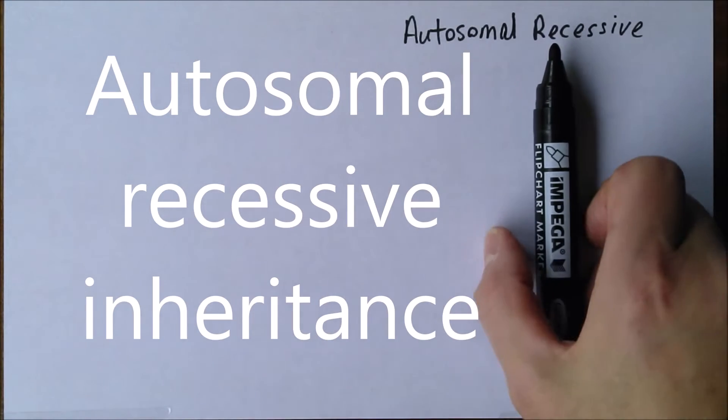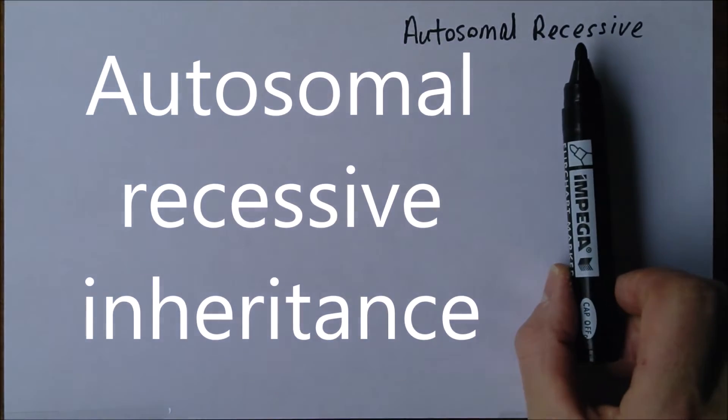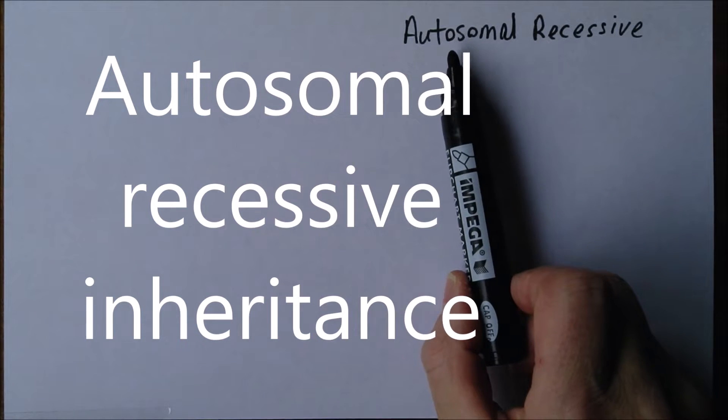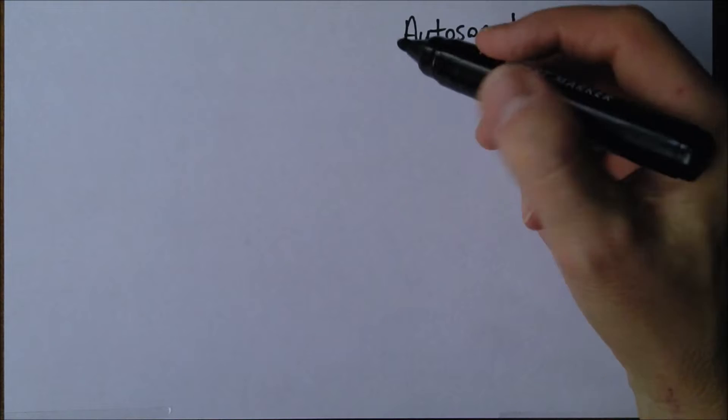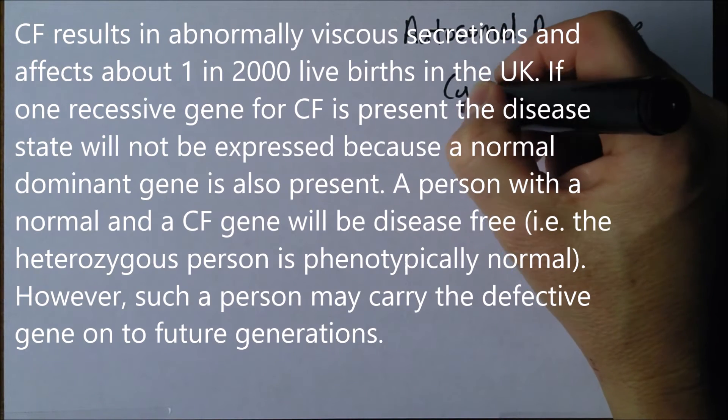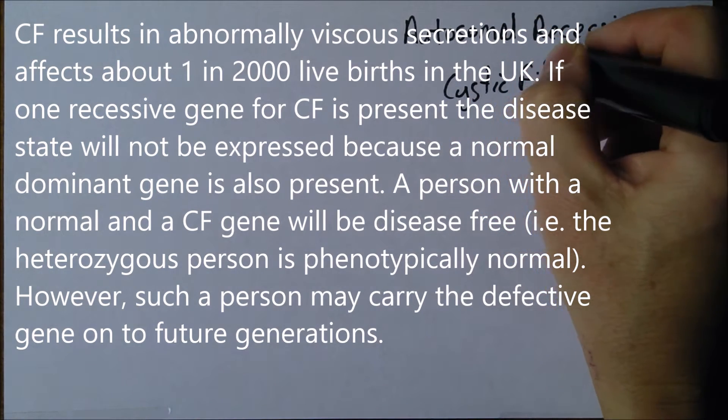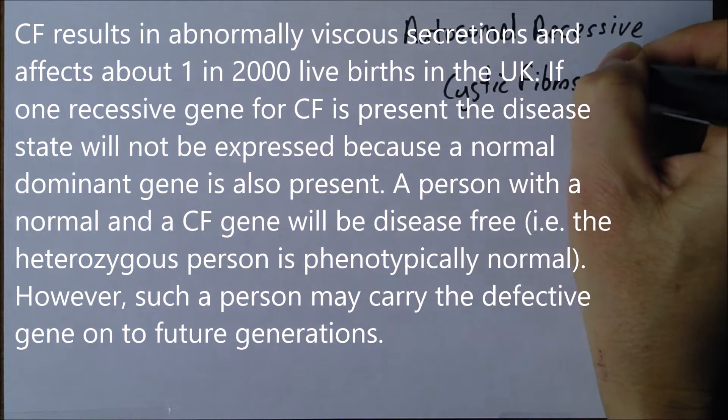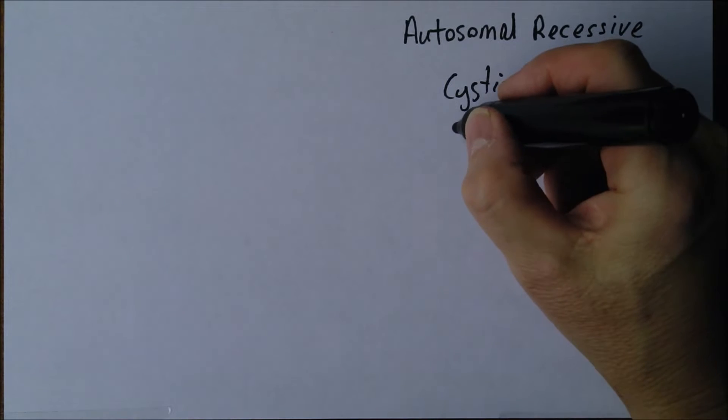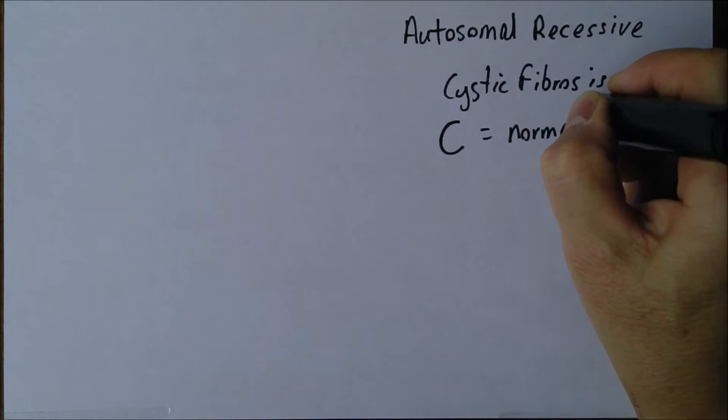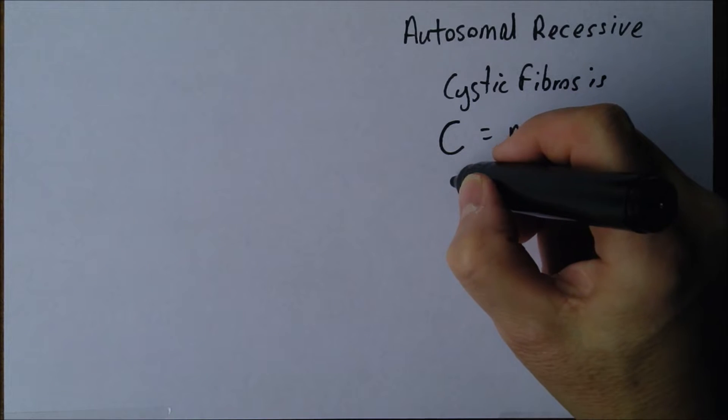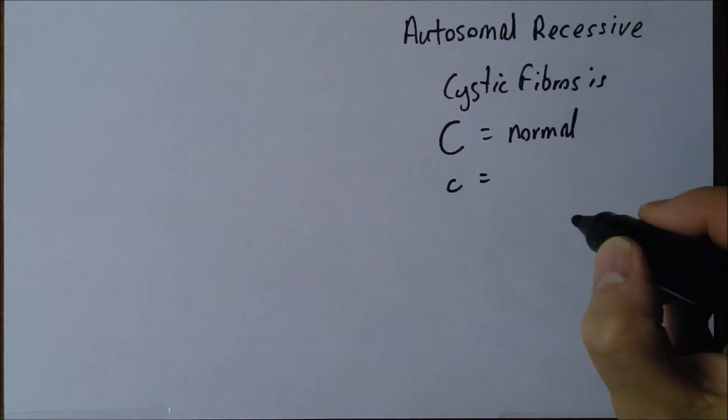Now, autosomal recessive inheritance - recessive genes carried on the autosomes. The example I want to take is cystic fibrosis. It's an abnormal condition but it's recessive, so the normal gene is dominant. We give that a capital C. The cystic fibrosis gene is recessive.